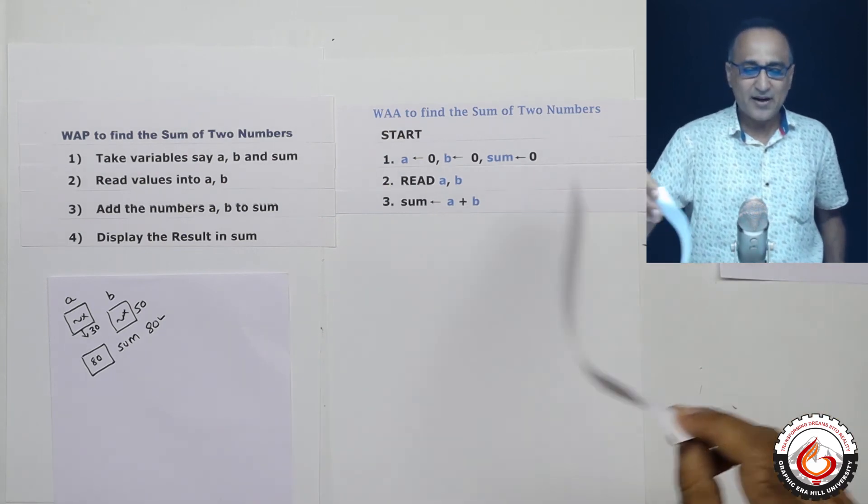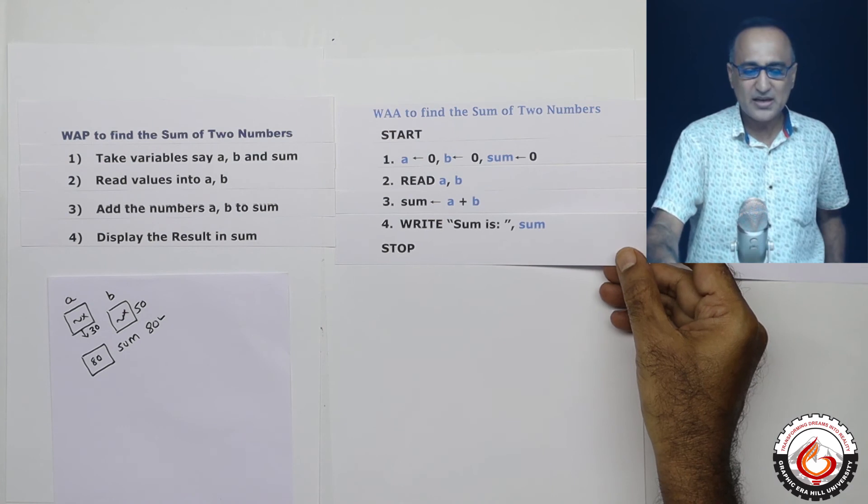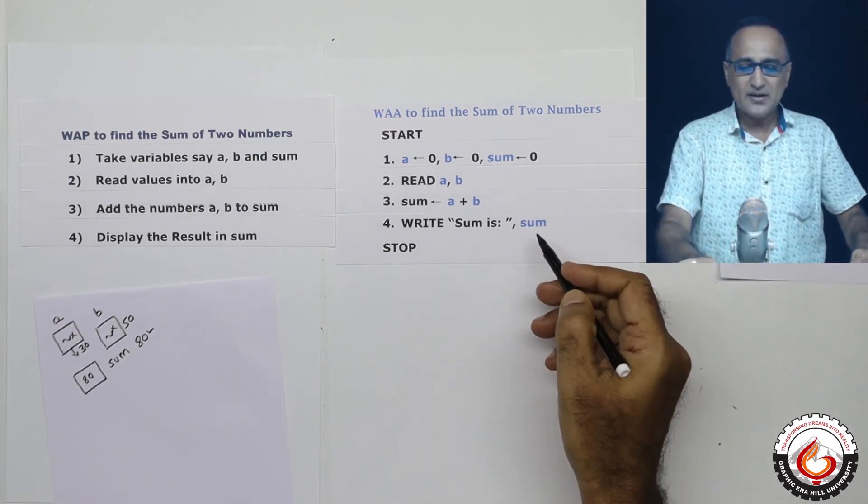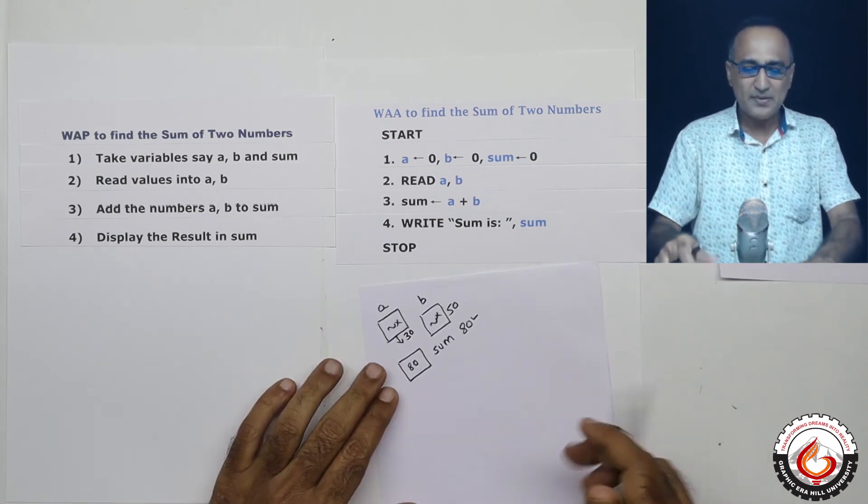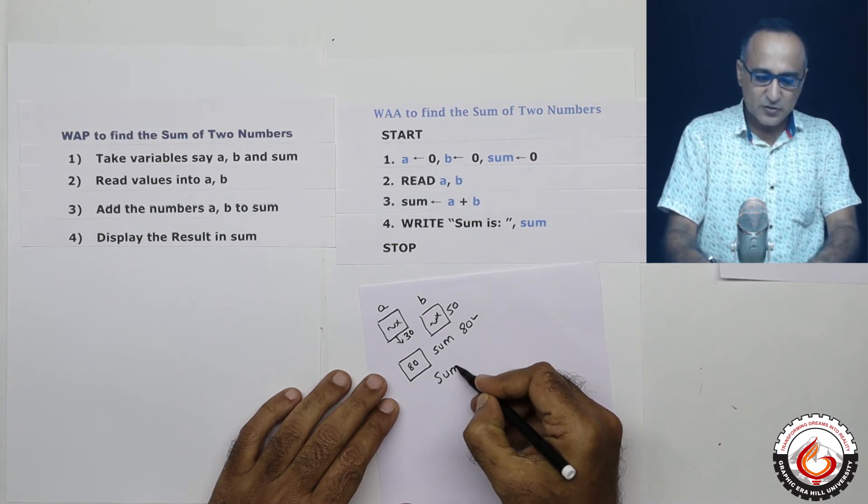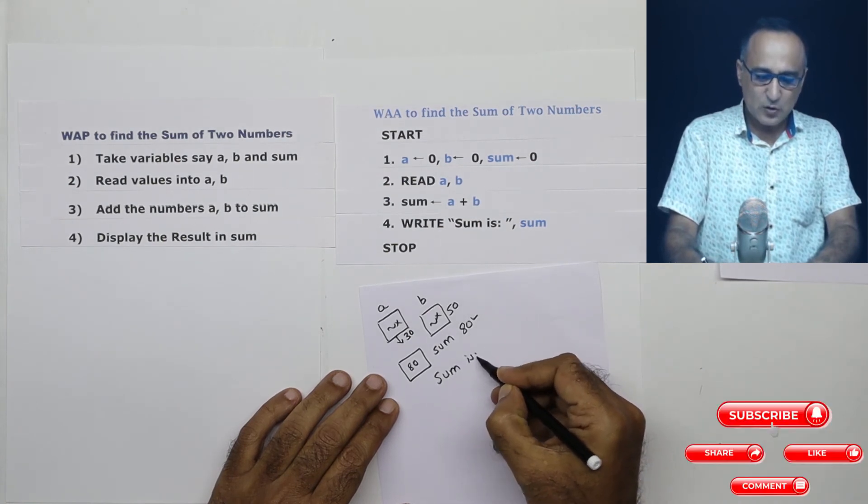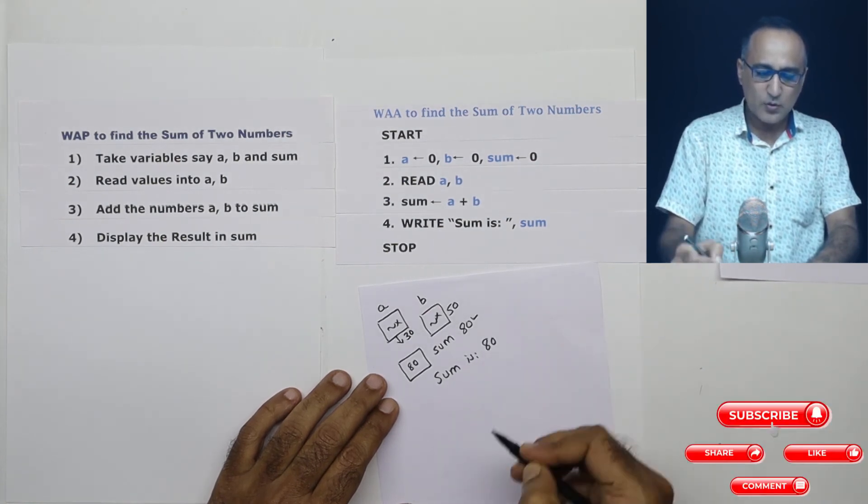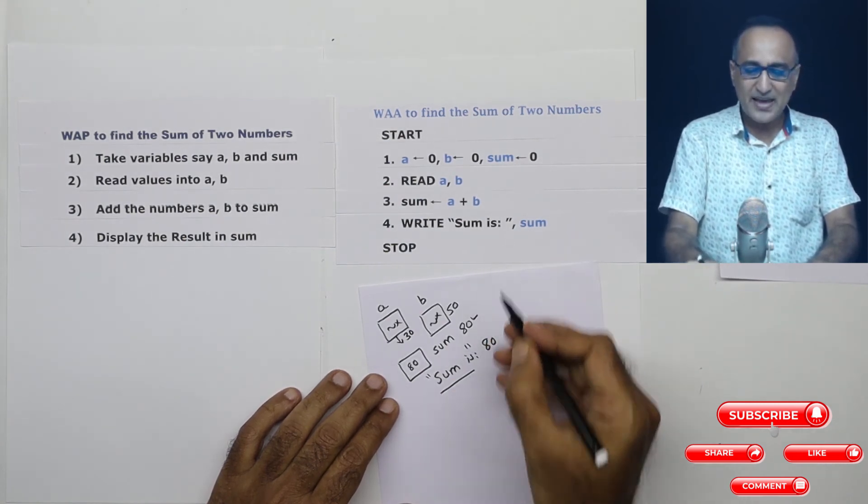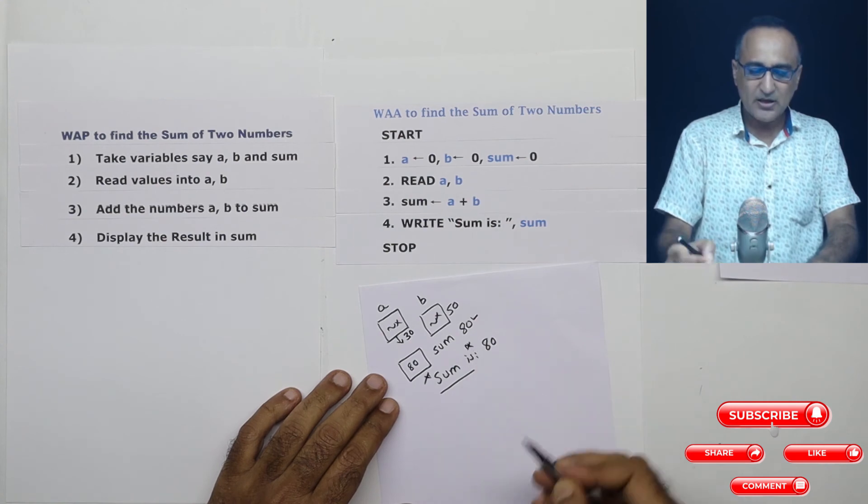And finally, if I have to display the sum, I am just going to say write sum is colon, sum. So what will happen is suppose a and b were the numbers entered, the output result would print something like this. It would say sum is colon and it would print the value 80. Anything which is in double quotes is going to be printed as it is without the double quote.